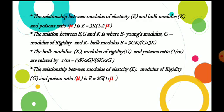Relationship between modulus of elasticity, bulk modulus, and Poisson's ratio: E = 3K(1 − 2μ). For E, G, K: E = 9GK / (G + 3K). For K, G, and Poisson's ratio: μ = (3K − 2G) / (6K + 2G). For E, G, and μ: E = 2G(1 + μ). These equations are very important.